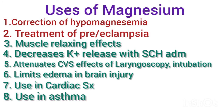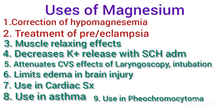Magnesium causes bronchodilation through inhibition of calcium-mediated smooth muscle contraction, inhibition of histamine release from mast cells, and inhibition of nicotinic acetylcholine release. For this reason, intravenous magnesium has been reported to improve bronchodilation when standard therapies have failed in bronchial asthma.